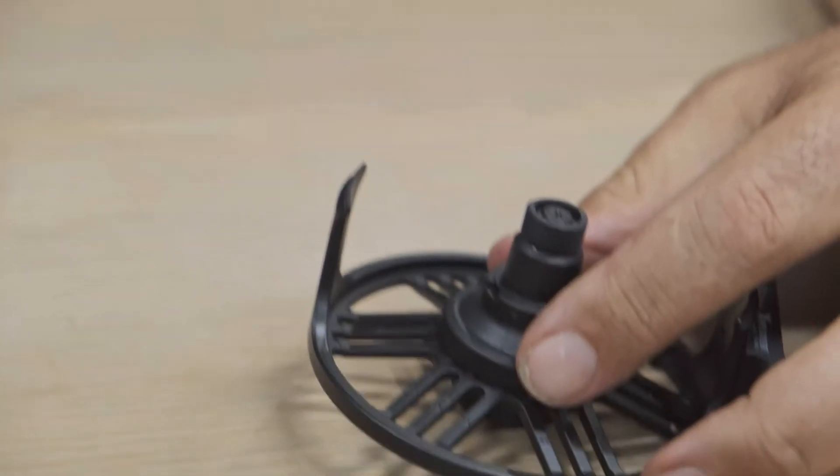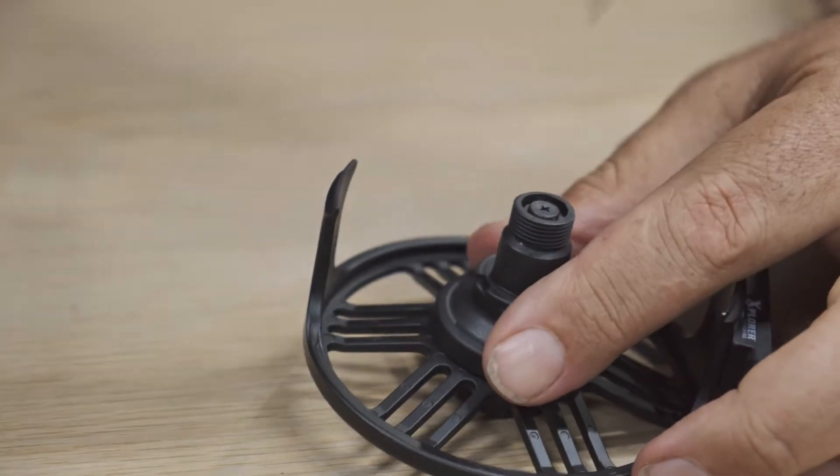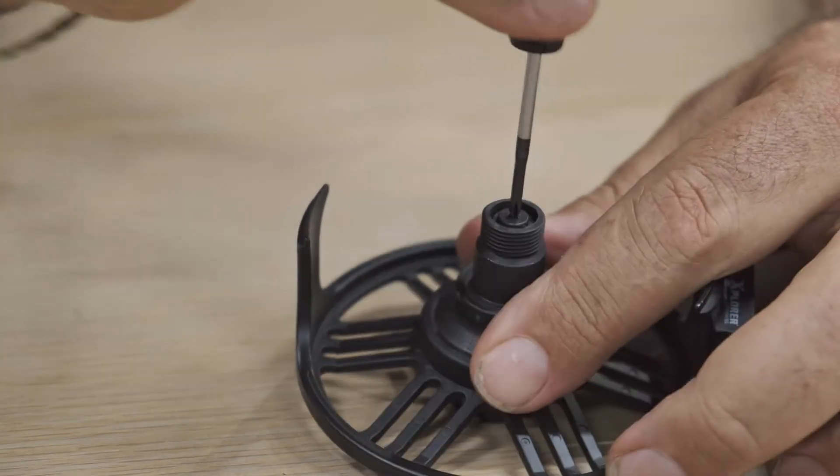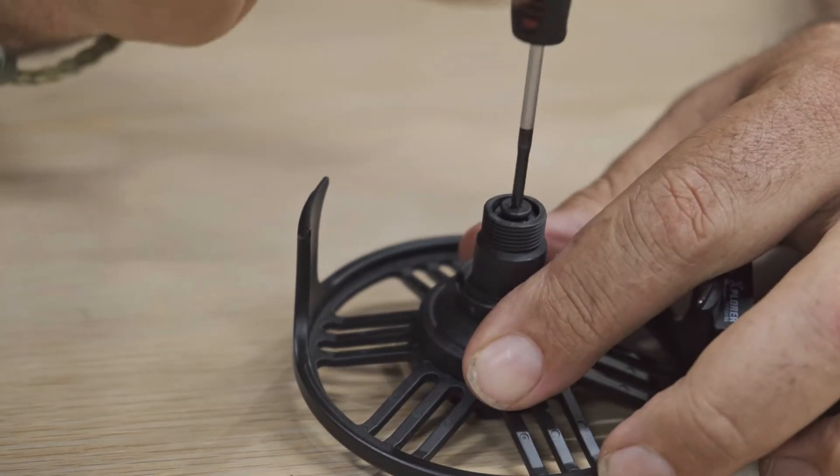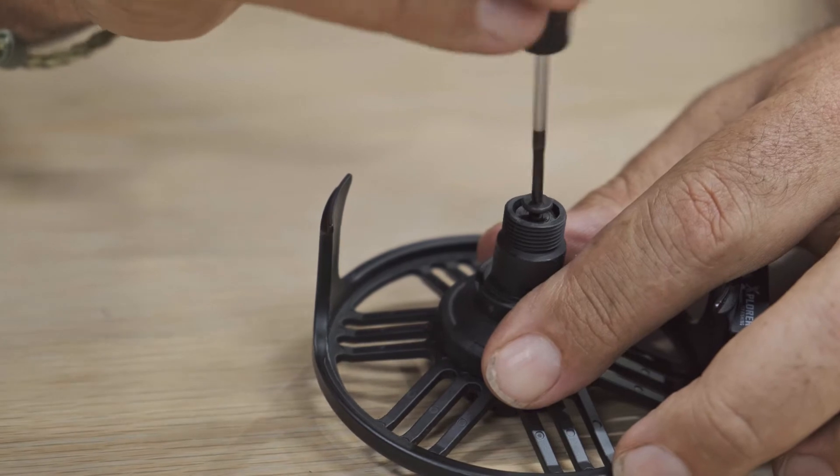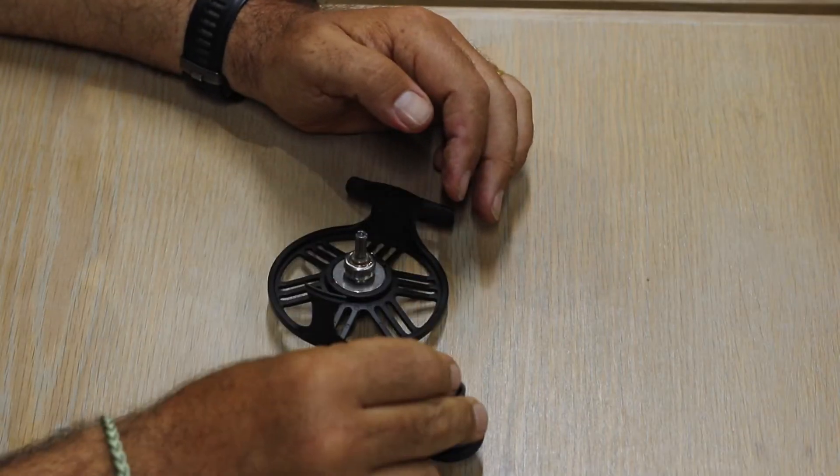On the top you have a star screw that covers the cap here. Remove the screw gently and pop it to one side.